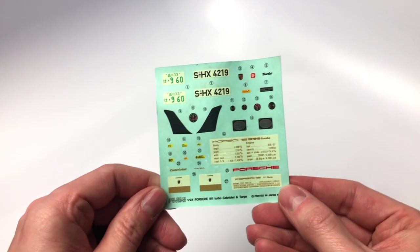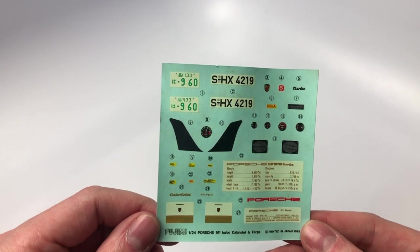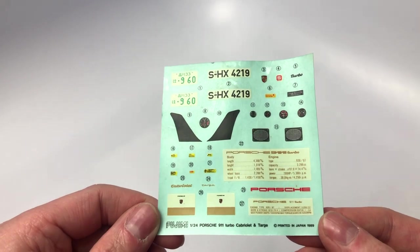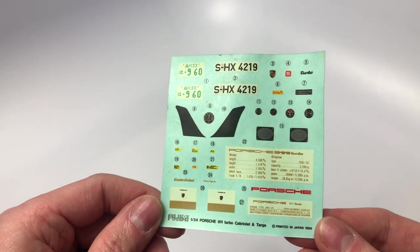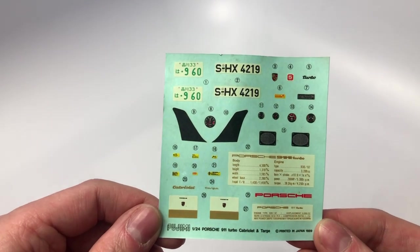The decal sheet is detailed and interesting. We can see information pertaining to the Porsche about the body dimensions and the engine specs. This is something nice to add when displaying the kit or if you take it to a contest.